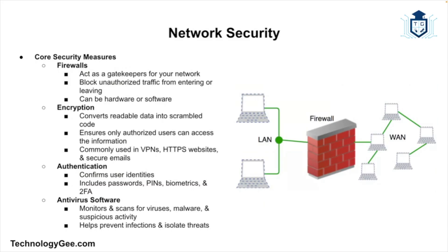With great connectivity comes great responsibility, so network security is a huge part of modern networking. Without it, anyone could snoop on your data, hack your devices, or infect your system with malware. Here's how networks are protected: firewalls act like bouncers and block unwanted traffic; encryption scrambles data so only authorized parties can read it, used in VPNs and HTTPS websites; authentication verifies users with passwords or two-factor login; and antivirus software scans for malicious activity. Even your Wi-Fi password is a form of network security.